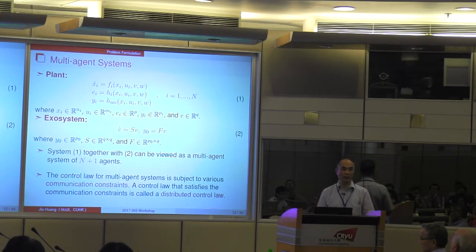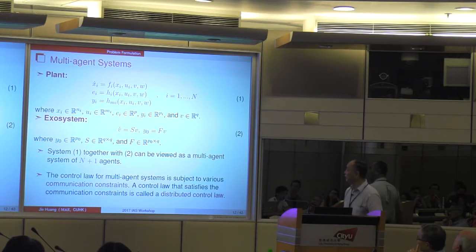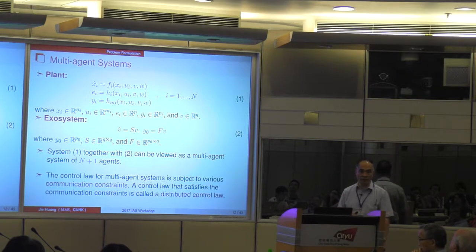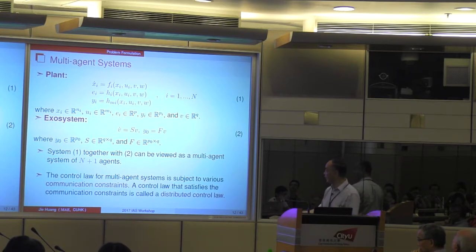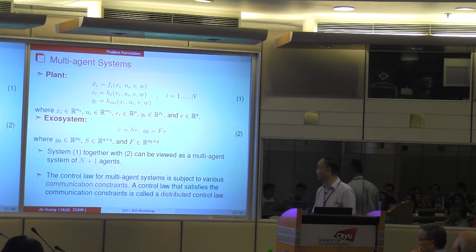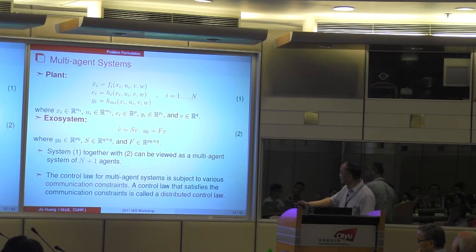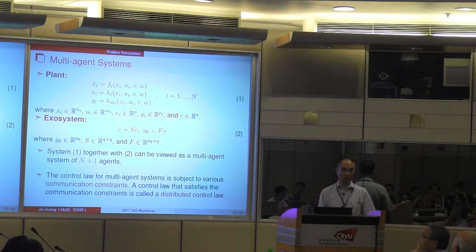Now we will give a formulation of the multi-agent control system. We are given a quite general nonlinear plant, where Xi, Ui, Ei, Yi are the state, control input, performance output, and measurement output respectively. W is an uncertain parameter vector. V is the reference signal, which is supposed to be generated by a linear exosystem. S and F are two constant matrices. This system together with the exosystem can be viewed as a multi-agent system with N+1 agents, where the exosystem is considered as the leader system, and the N subsystems are considered as N followers.